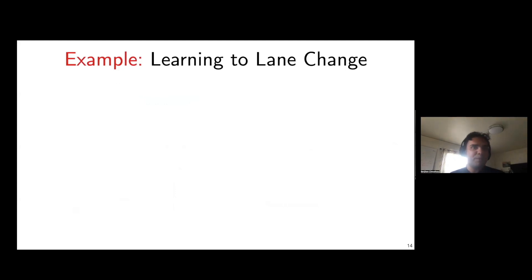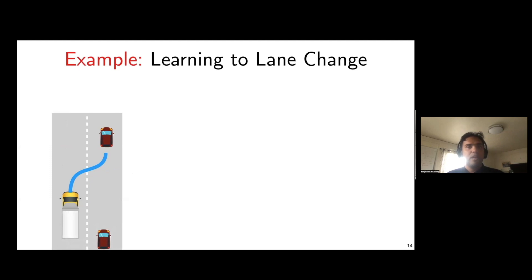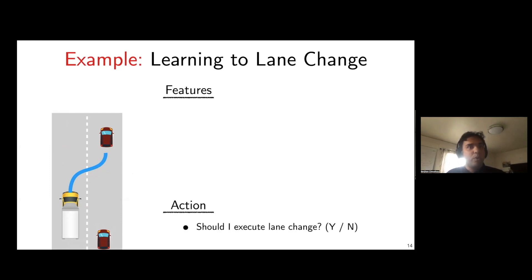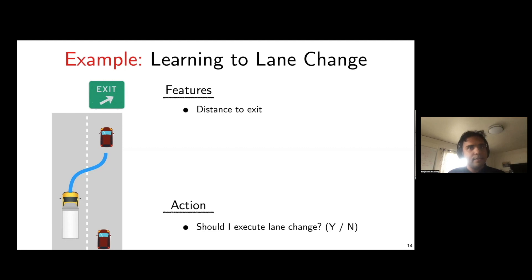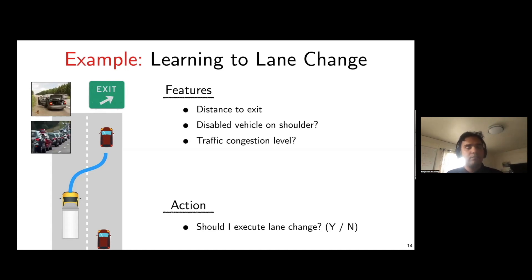Let's begin with imitation learning, motivated by a real problem at Aurora: when to do a lane change. Think of this as a binary classification problem — lane change or not. Features might include how far away the exit is, whether there's a disabled vehicle on the shoulder, or whether traffic congestion is too high. One day your intern adds a feature storing the past action — whether you decided to lane change in the previous time step.